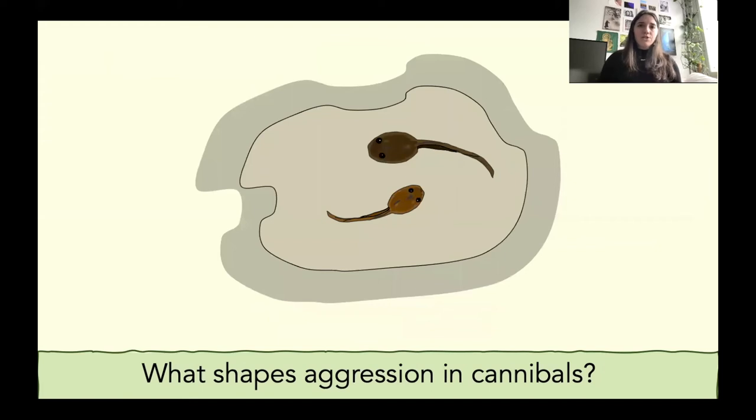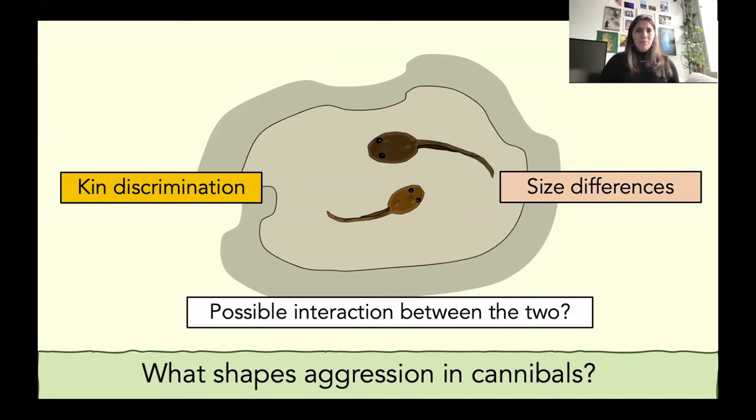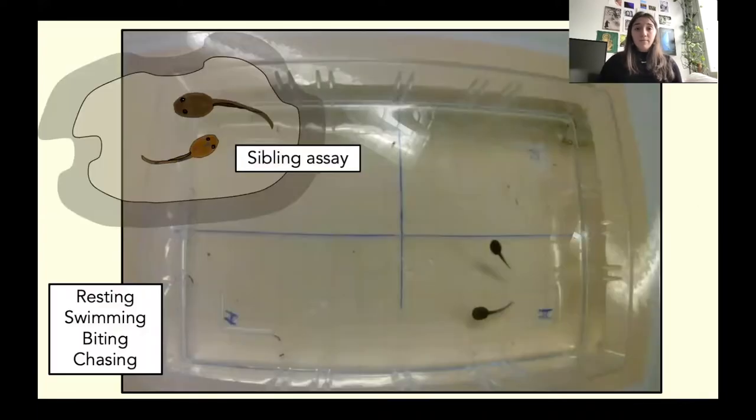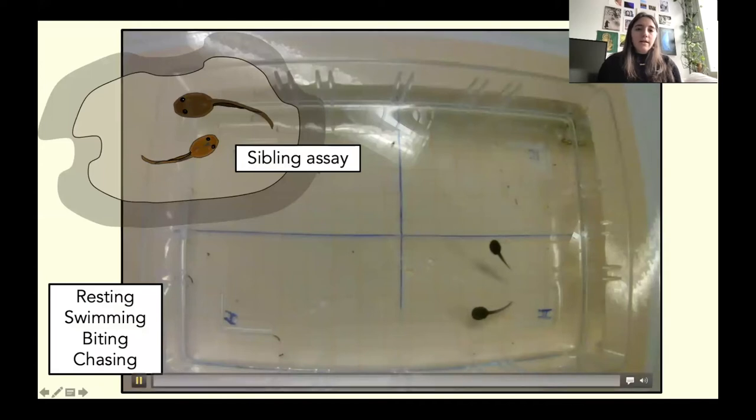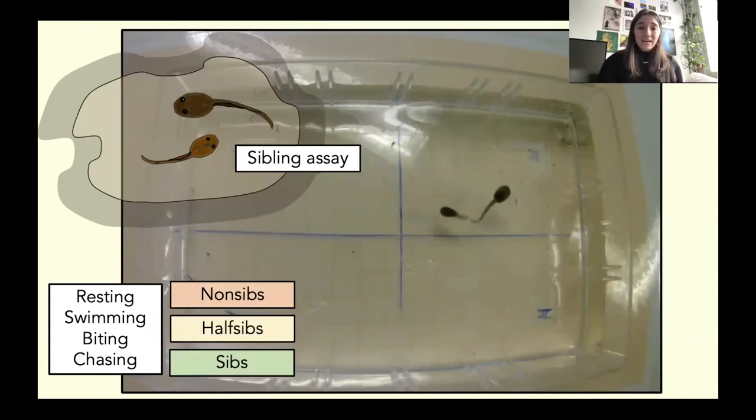Thus, in the question of what's shaping aggression in these cannibals, we have this possibility of kin discrimination, we have the weight of size differences between pairs, and also a possible interaction between these two components. So let me now show you our experimental setup. This consisted of pairs of tadpoles that I placed together and I observed for an hour. I observed behaviors like swimming and resting, and also more aggressive behaviors like biting and chasing, and I repeated this 15 times for each treatment, and I used non-siblings, half-siblings, and full-siblings as treatments.